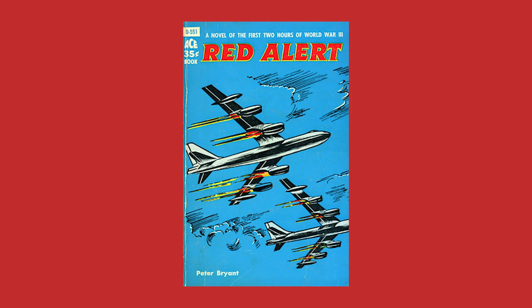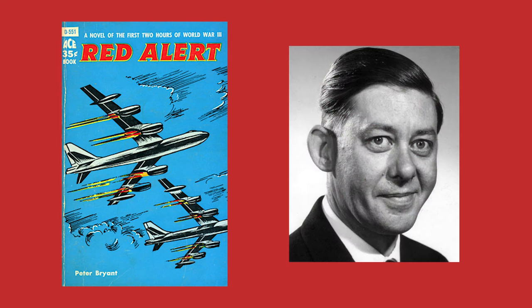First, we need to do a bit of history homework. It all starts in 1958 with the book Red Alert by Peter George. This book would act as the sole inspiration for Kubrick's Doctor Strangelove, so much so that the film would essentially be an adaptation of the book, with George collaborating on the screenplay with Kubrick and satirist Terry Southern.